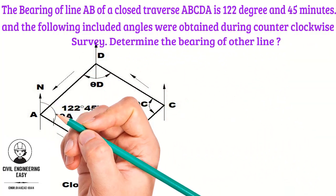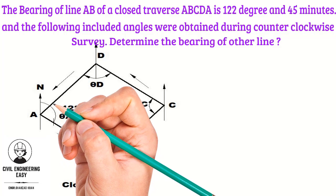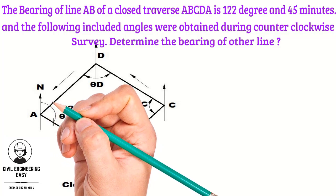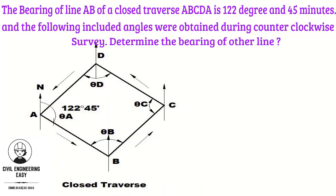Let's concentrate on the solution of the given numerical. Look at the figure — only the forebearing of line AB is given, that is 122.45 min. All of the included angles are 90 degrees: Theta A, Theta B, Theta C, and Theta D are each equal to 90 degrees. We will find out the forebearing of each line from the included angles. Let's get started.